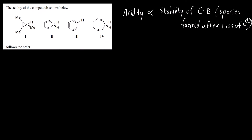In all these compounds, the circled proton is the acidic proton — this one, this one, and this one. What we can do is draw the conjugate base for all four structures. Greater the stability of the conjugate base, greater will be its acidity.